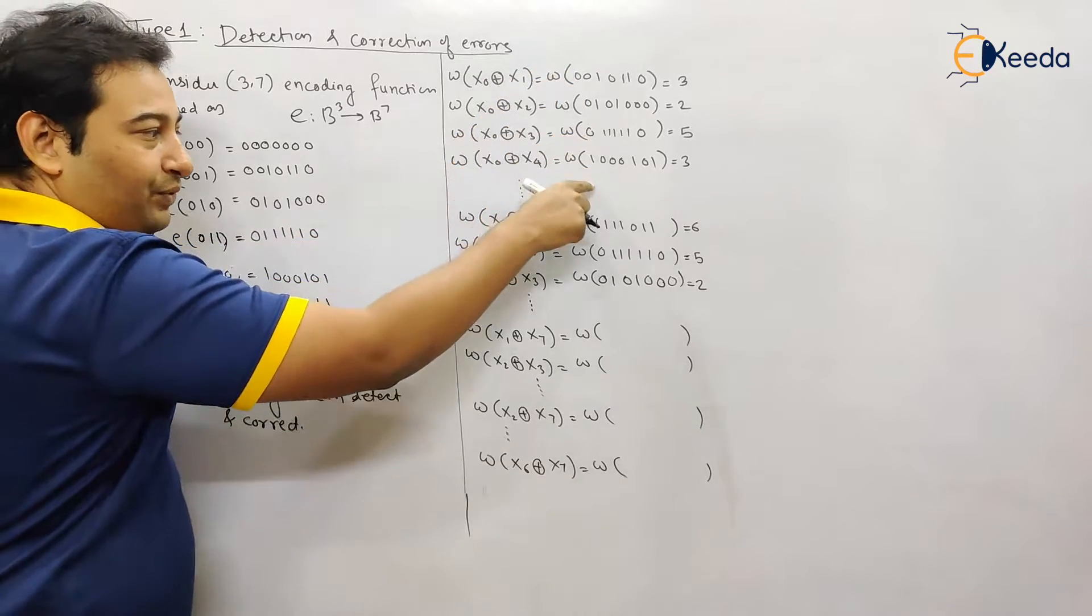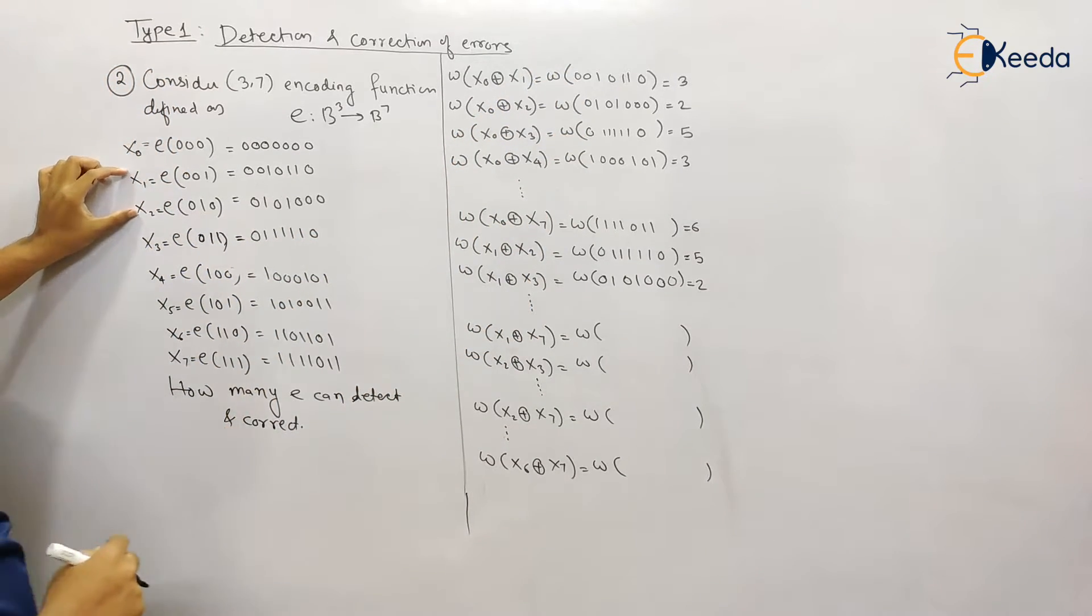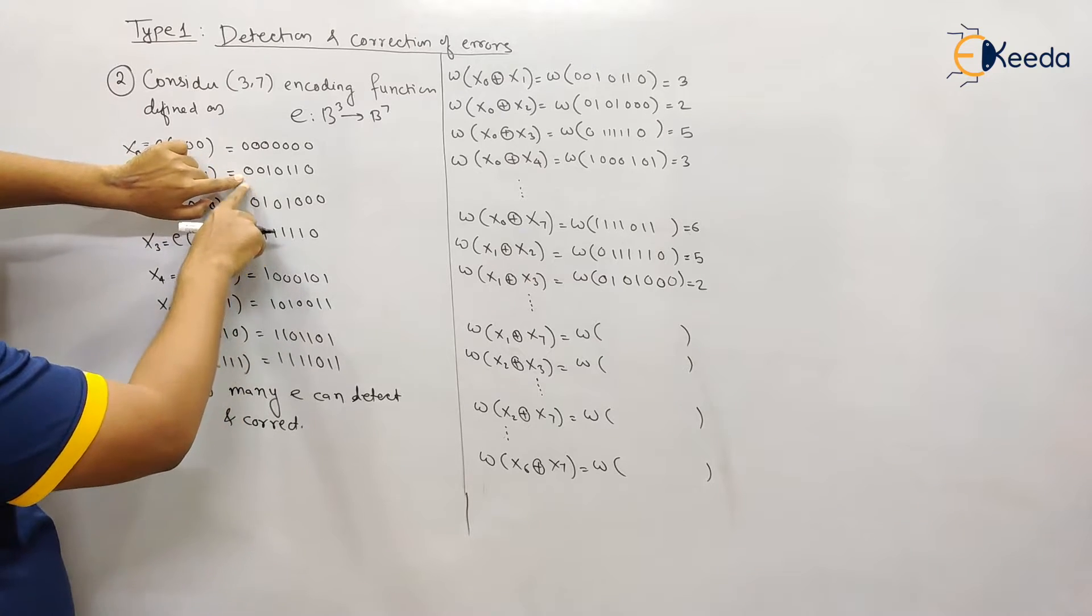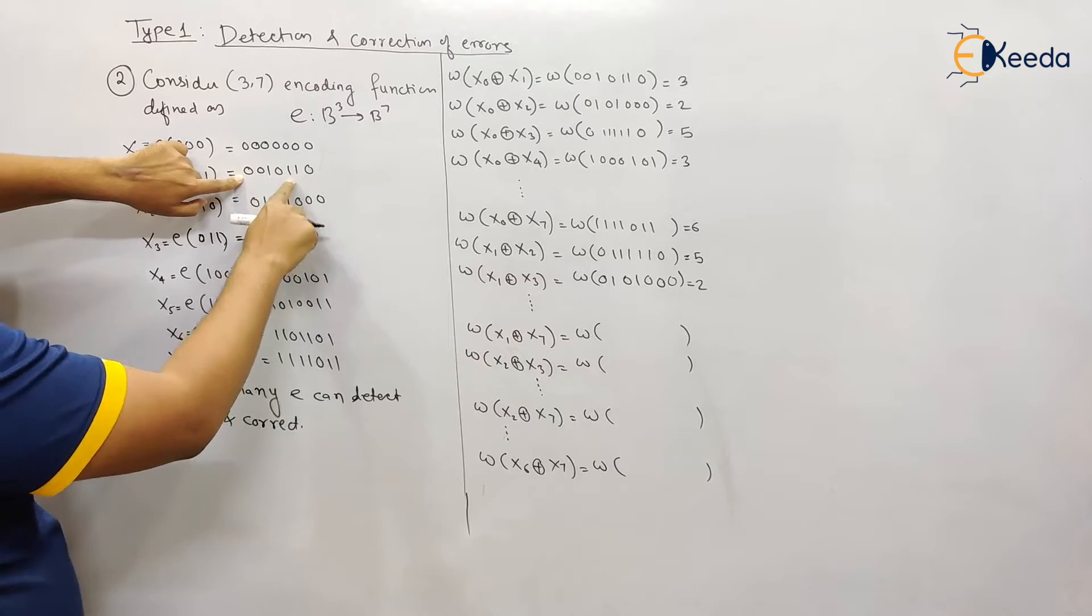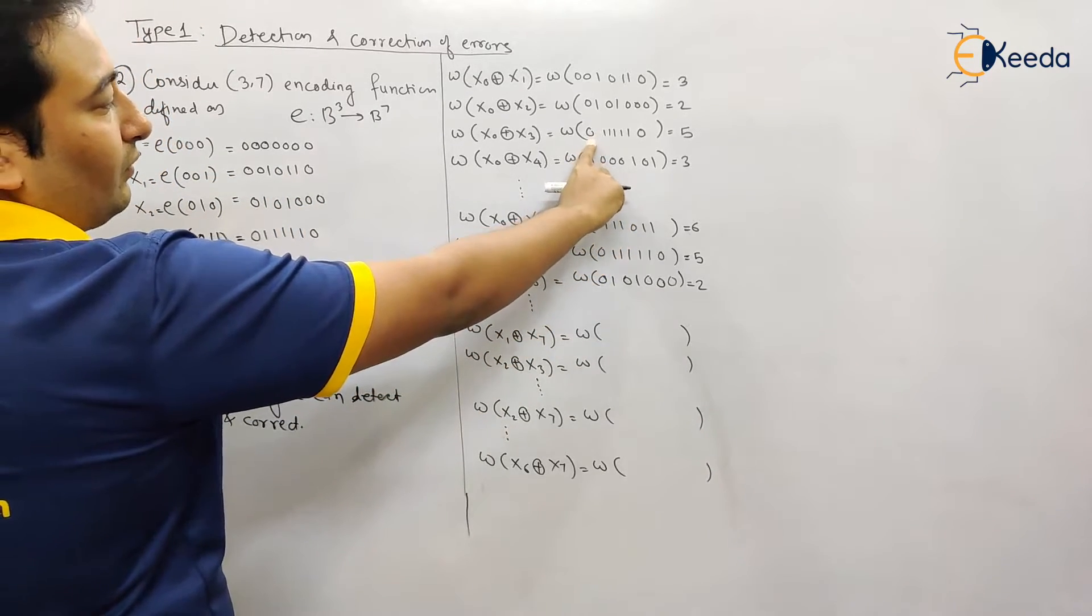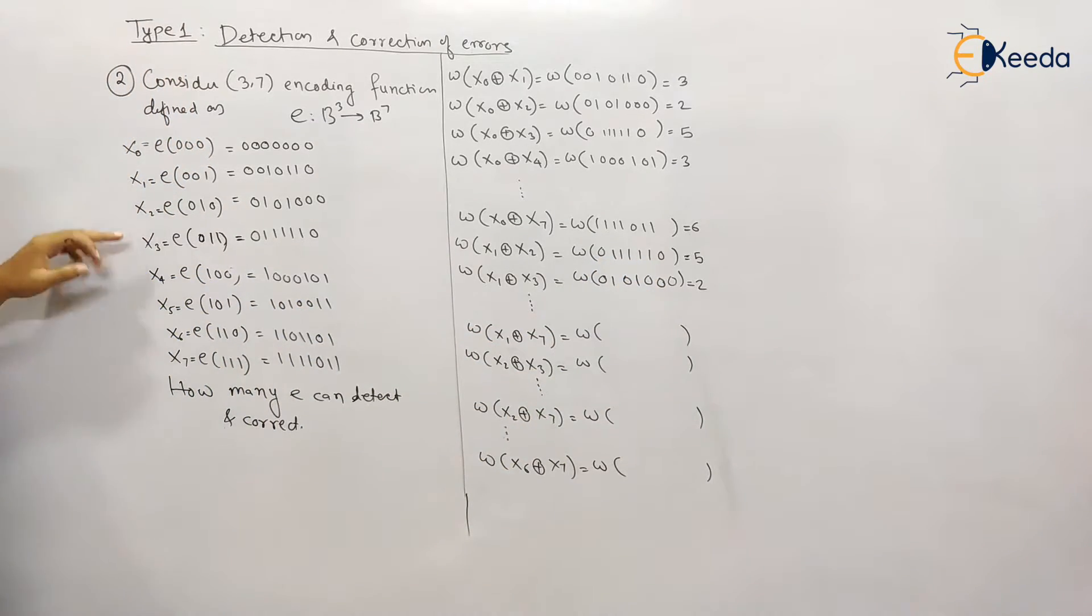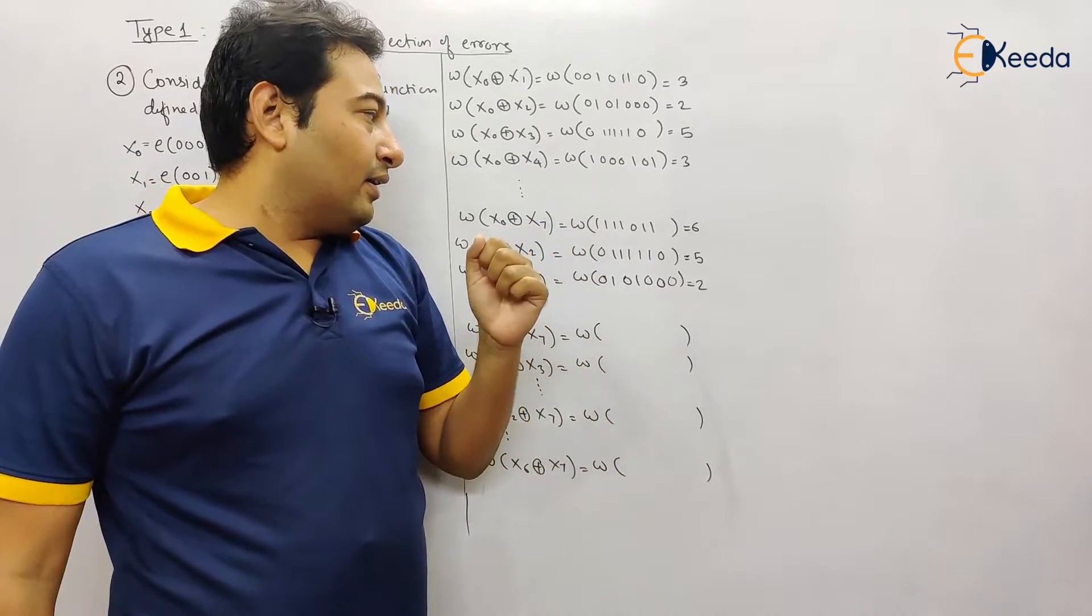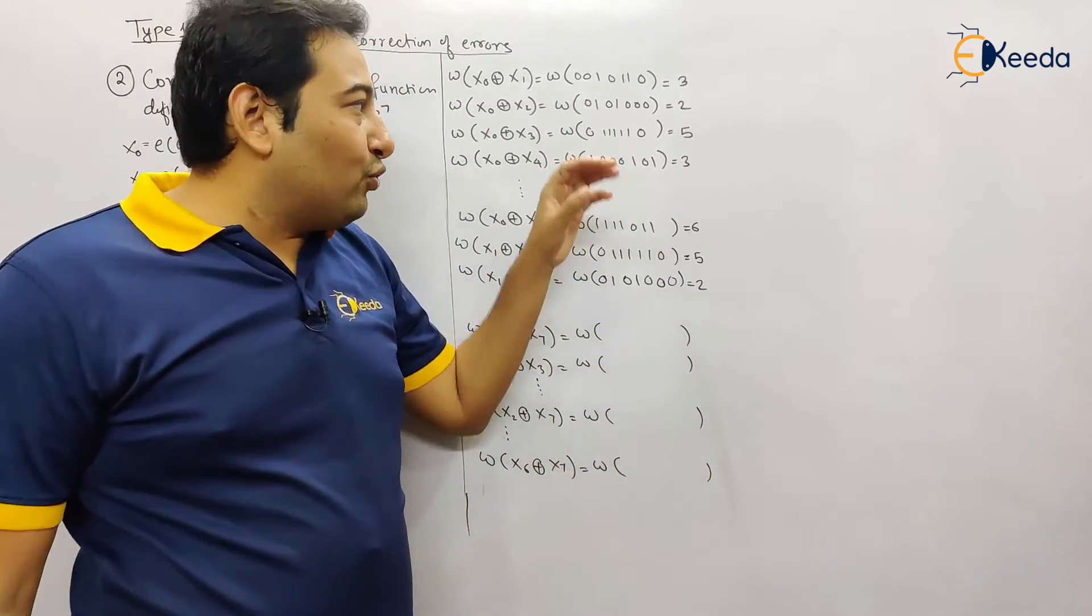Let's move on. x1 XOR x2: see here if you find XOR of these two terms, 0 0 is 0, this is 1 1 1 1 1 1 and 0, so this is the result. x1 x3 likewise. You need to find all the exhaustive combinations, no other option.